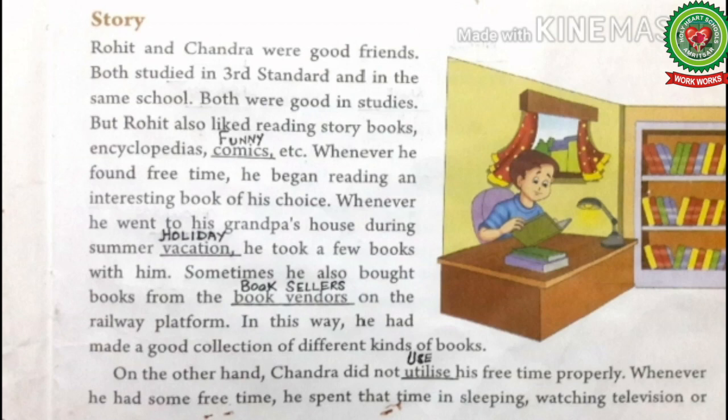Sometimes he also bought books from the book vendors or on the railway platform. Underline the word 'book vendors' and write down its meaning: booksellers. In this way he had made a good collection of different kinds of books. When Rohit went to his grandpa's house during vacation, he also took his books with him. Rohit had a good collection of books and made a small library.